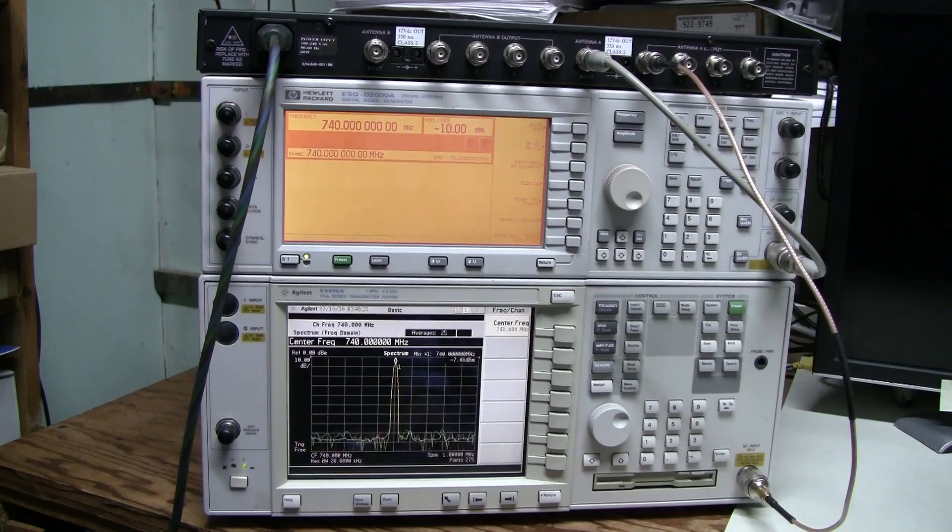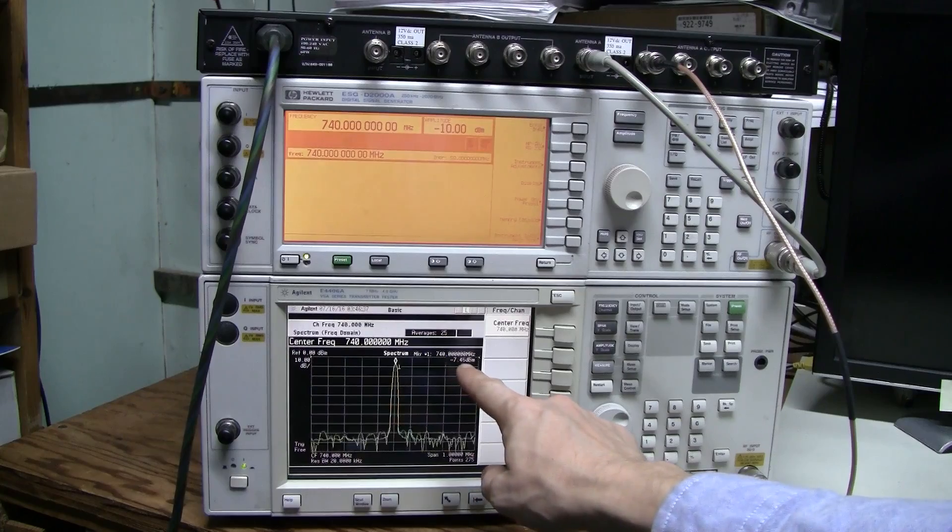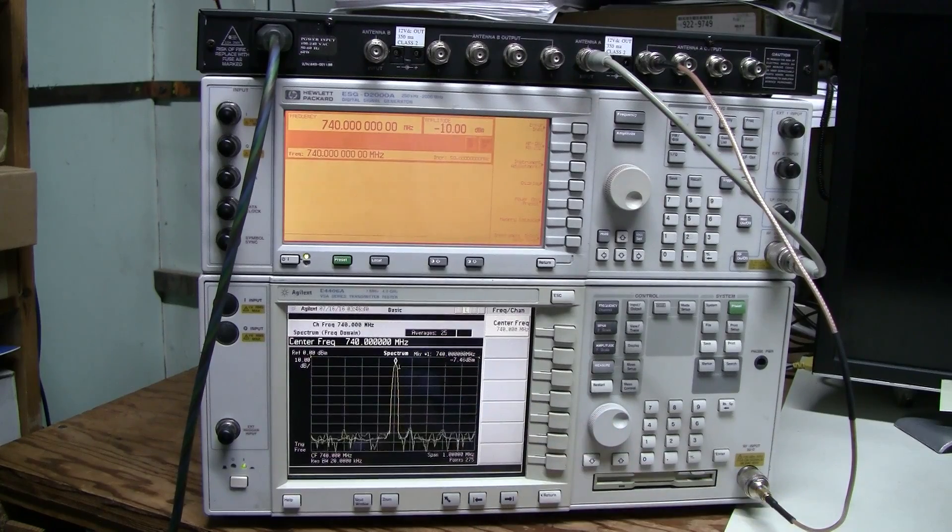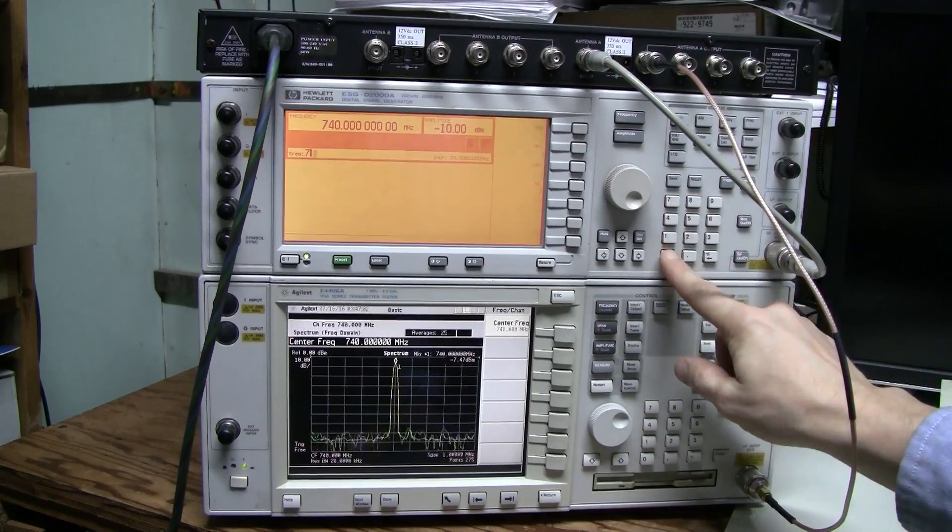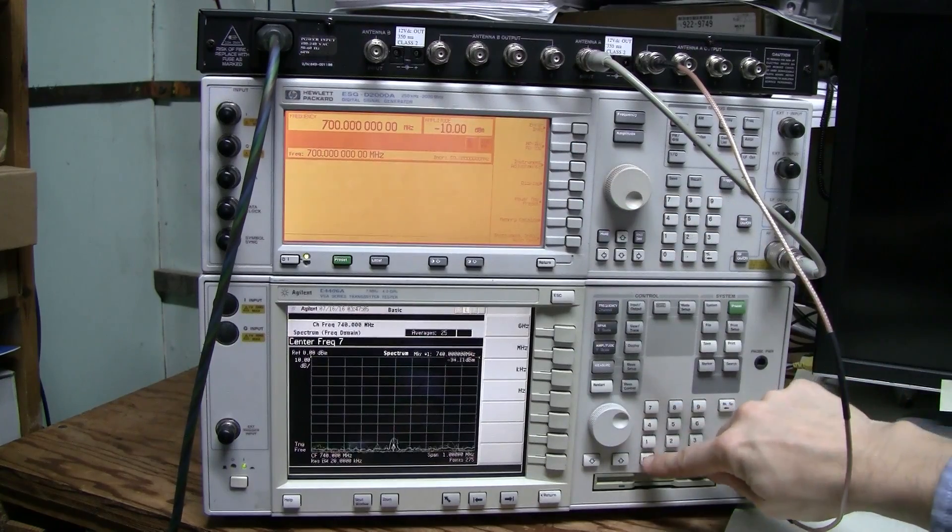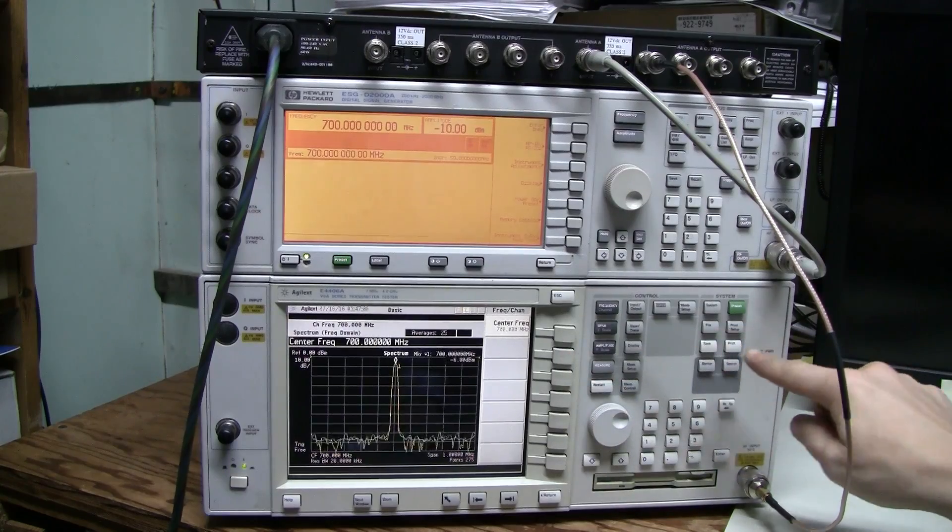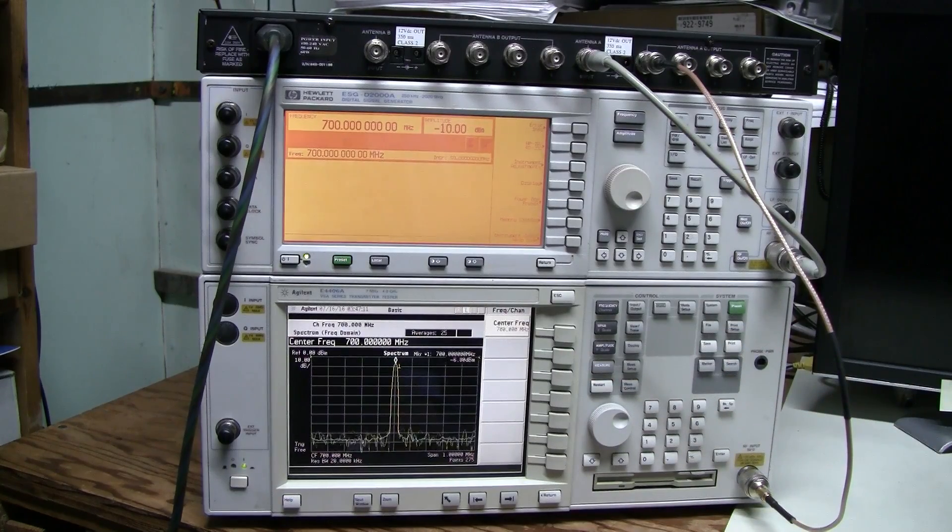Here we have 740 MHz again just for reference. And now we have minus 7.4 dBm output. Before it was minus 9.3 dBm output. So, it is about 2 dB higher. So, the insertion loss of that bandpass filter is about 2 dB or so. Which sounds about right. Now, let's try 700 MHz. And we read minus 6.8 dBm. Which is quite promising.